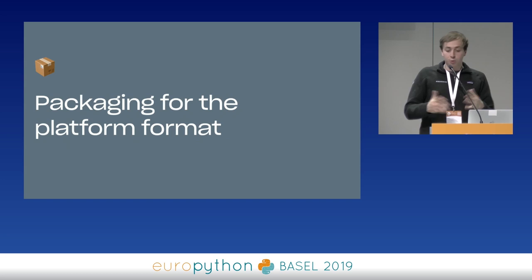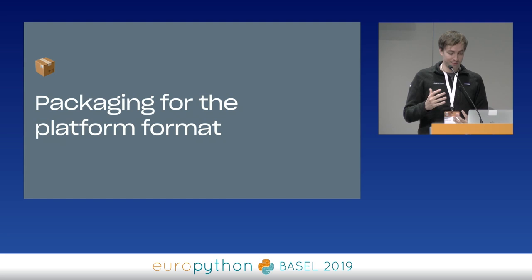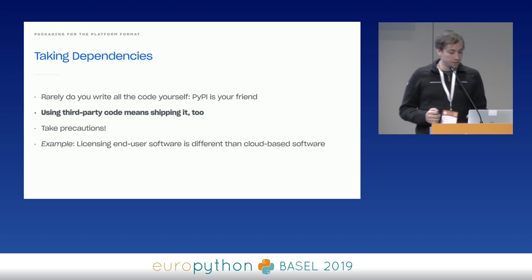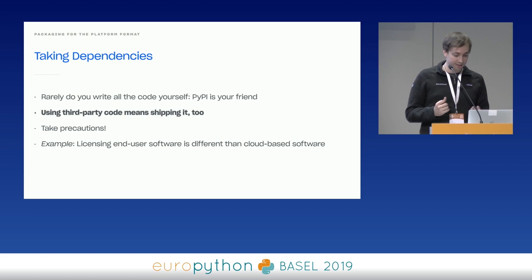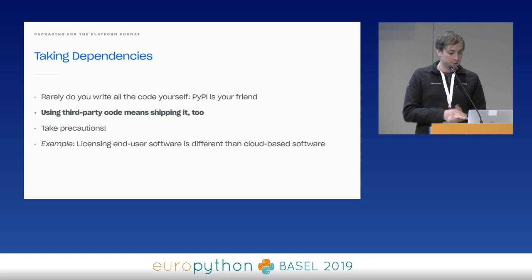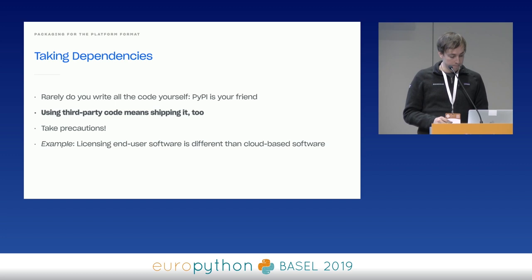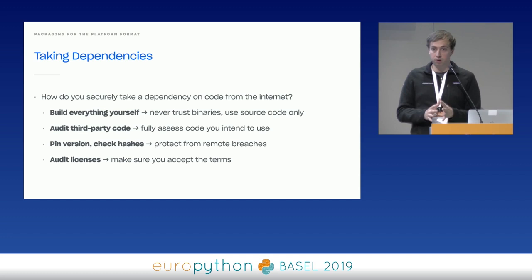Now that we can integrate with the platform and have the shape of an app, your customer is still the end user — to obtain your app, they need to be able to get it somehow. We need to package the app in a way that's easy for a user to get. One quick detour: we talked about using third-party bindings, and PyPI is your friend — there are tons of great packages that can help control costs. But using third-party code in this case means shipping it too, and it's really important to take precautions, especially with licensing. End-user software is very different from cloud-based software in the licensing world.